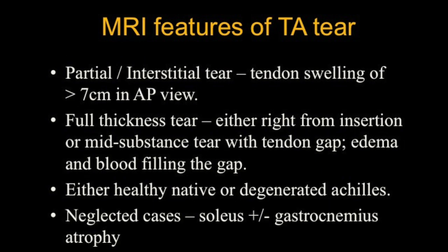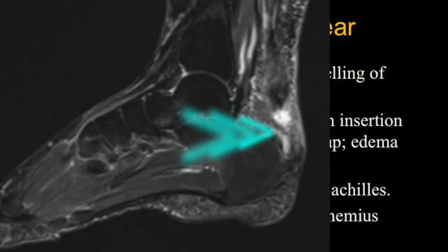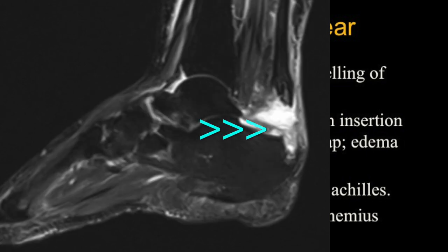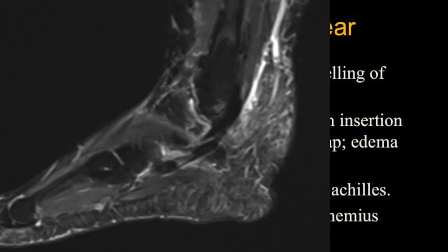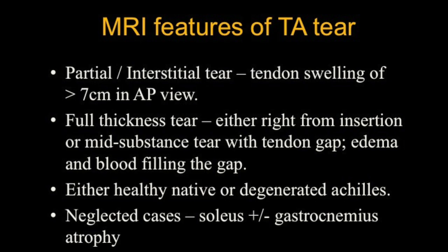The MRI features of tendo Achilles in brief: partial tear usually presents as tendon swelling, a focal swelling more than 7 millimeters. Full thickness tear is either from the insertion — there may be an avulsion fracture fragment — or a mid-substance tear with a tendon gap filled with edema and blood. We assess whether we see a healthy or degenerated Achilles tendon on either side of the gap, and in neglected cases we look for soleus and gastrocnemius atrophy.